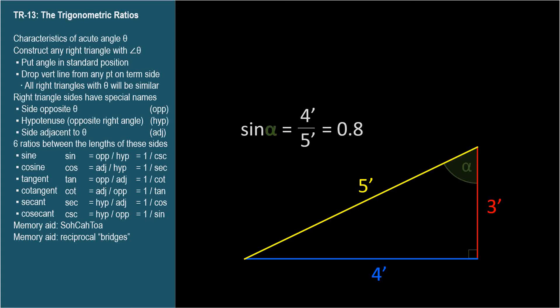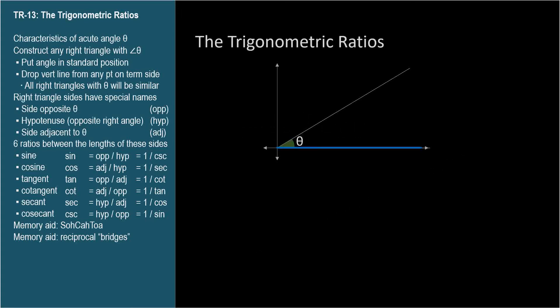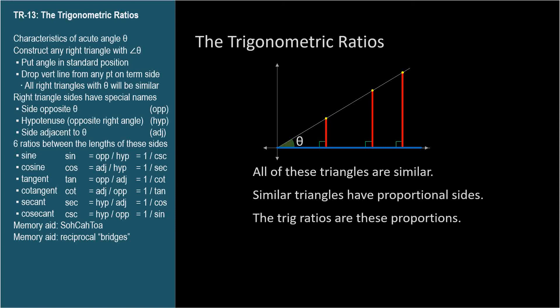I want to go back to an earlier slide where we picked a point on the terminal side of angle theta to create our triangle. I said it doesn't matter which point we pick, and the reason is that all of the right triangles we can possibly draw having theta as an acute angle will be similar to each other. All the angles will be the same, and all the sides will be in the same proportion. The trig ratios are simply these proportions, the same ratios no matter the size of the triangle we imagine. The trig ratios describe angles, not triangles.